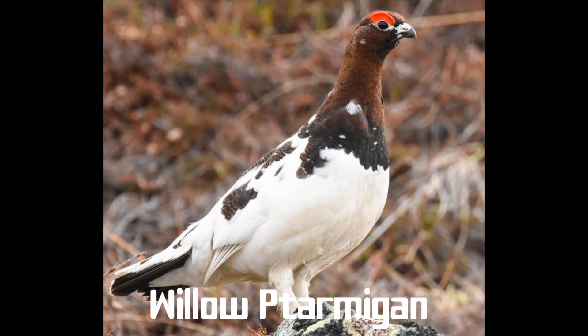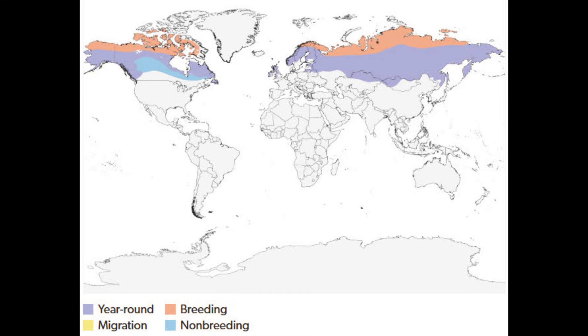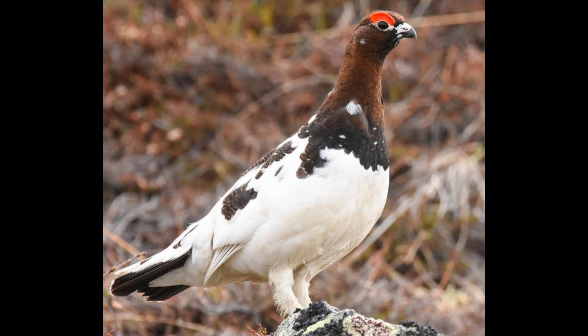The willow ptarmigan is snowy white in the winter and an intricate mix of reds and browns in the summer. This grouse of the sub-arctic tundra lives year-round in areas where most bird species can survive only during the summer. Ptarmigan are well suited for brutally cold winters. Perhaps because their camouflage is so good, wild ptarmigan often act tame and unafraid of people.